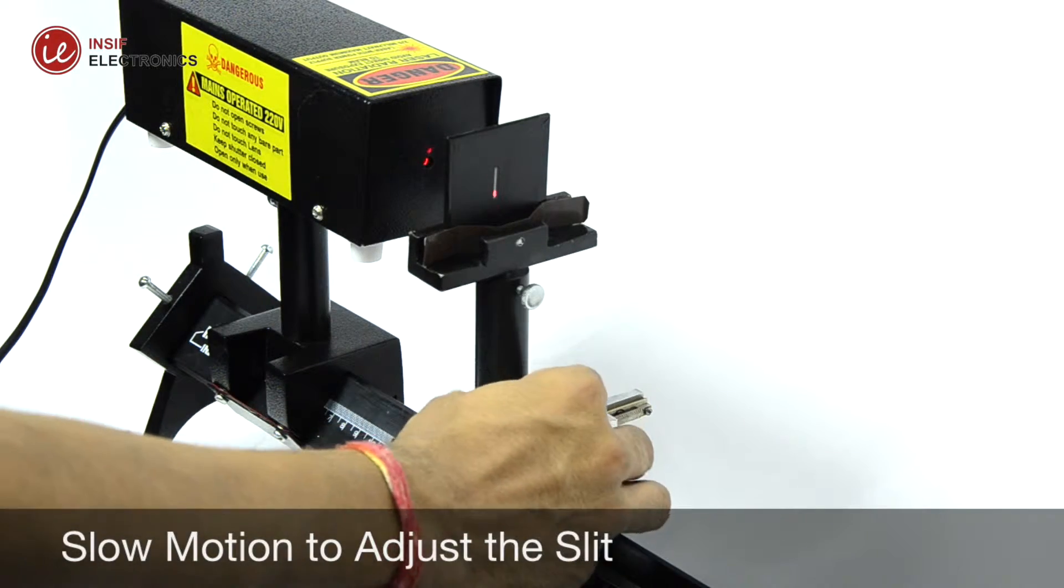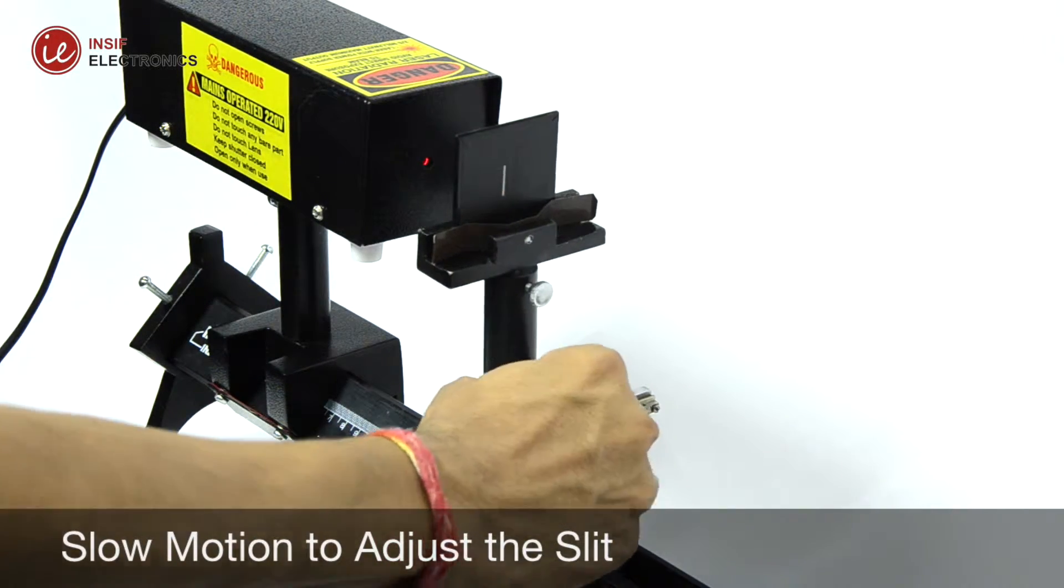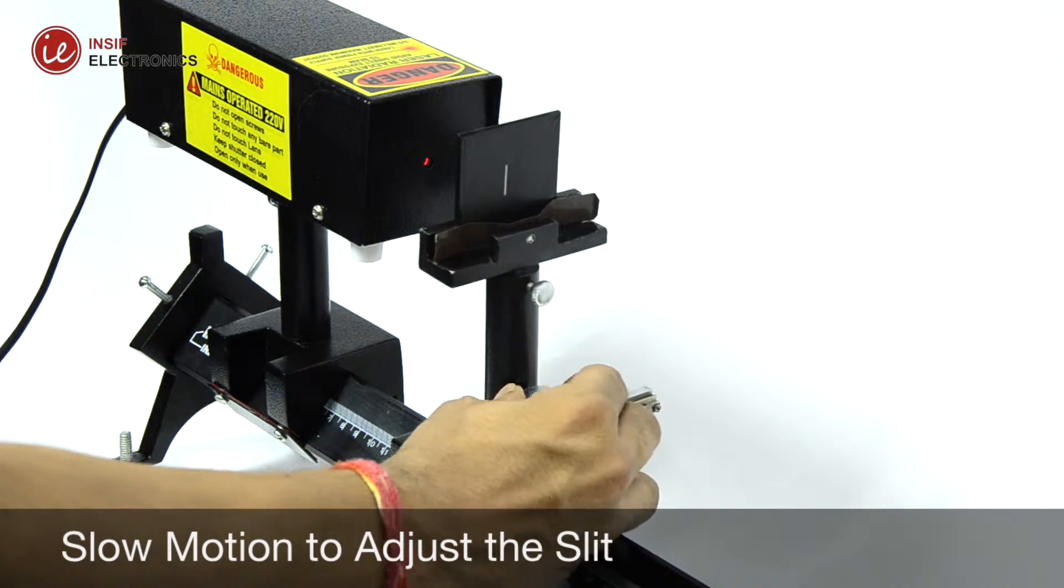As the slit mount has slow-motion control, rotate the knob and adjust the slit so that the slit is properly aligned with laser.